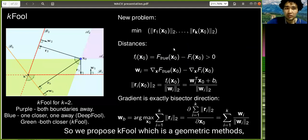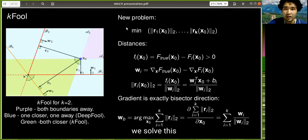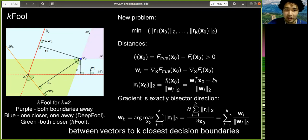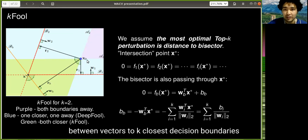So we propose K-Fool, which is a geometric method to find top-k attacks. We solve this multi-objective optimization problem, and we find that the most optimal direction to fool top-k prediction of a classifier is to follow the bisector direction between vectors to the k closest decision boundaries.